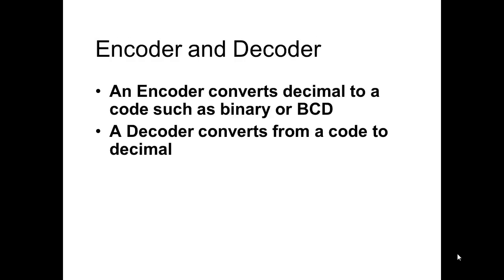An encoder basically converts a decimal number over to a code, such as binary or BCD. We can tie in 0 to 9 inputs and have those input as the decimal number, which will output the binary code. So when we put in the number 9, we get out the binary number for 9 or the BCD code for 9, which is the same thing. A decoder actually goes the other way — it converts a binary number over to a decimal number.